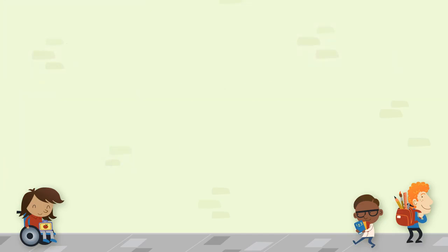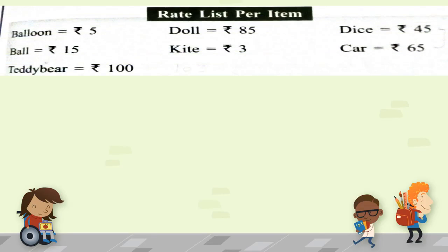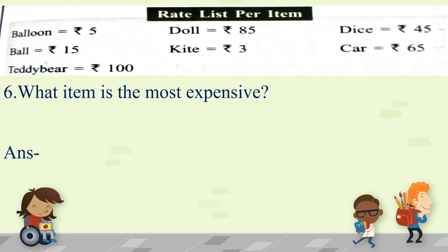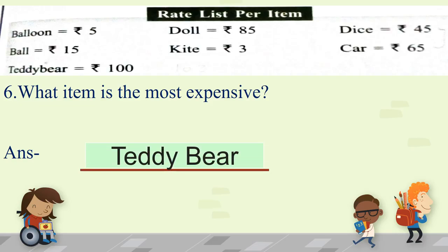With the same rate list, next question: what item is the most expensive? Expensive means sabse mehenga. Looking at the rate list, doll is 85 rupees, but teddy bear costs 100 rupees and no item has a higher cost than that. So the answer is teddy bear at rupees 100 — that is the most expensive product.